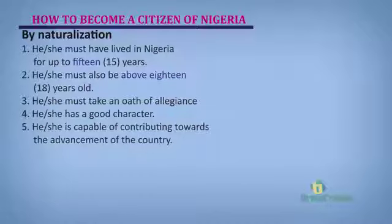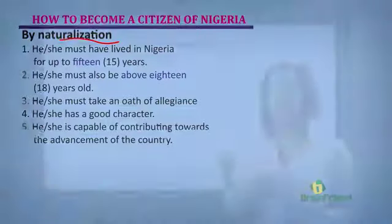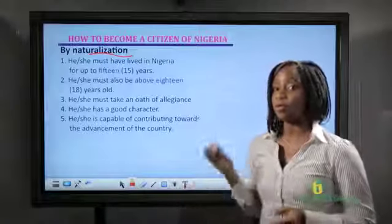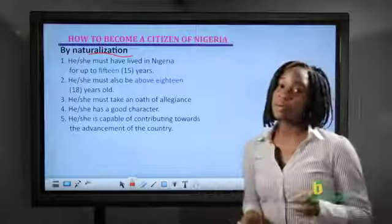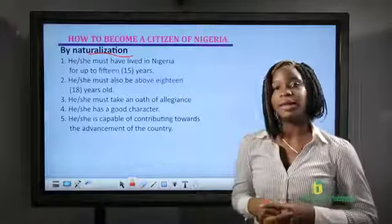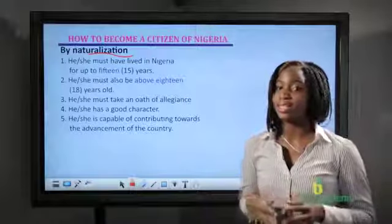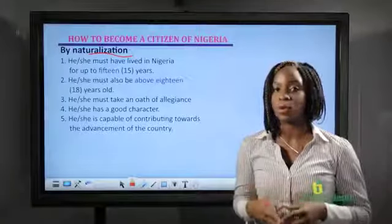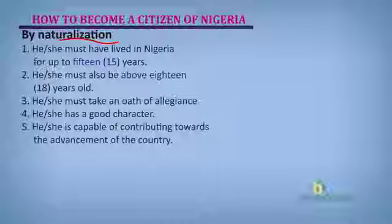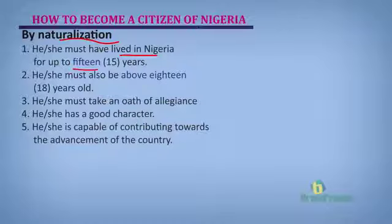Another way through which a person can become a citizen of Nigeria is by naturalization. This is simply the process by which a foreign person is made a citizen of Nigeria. But before a person can become a citizen of Nigeria by naturalization, there are certain criteria which the person must meet. Some of those criteria are outlined here on the board. The first being, he or she must have lived in Nigeria for up to 15 years — not less than 15 years.